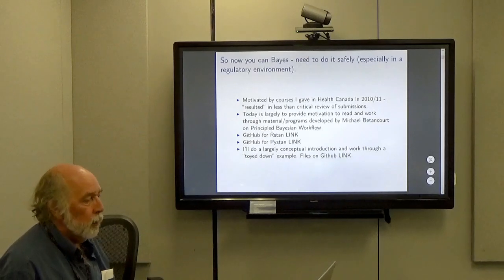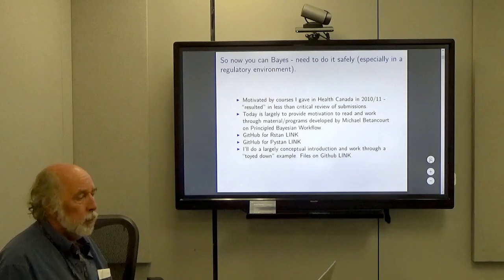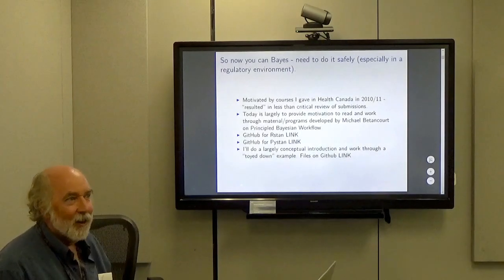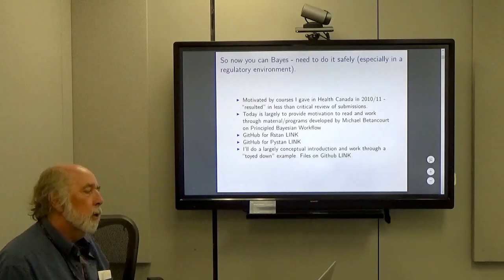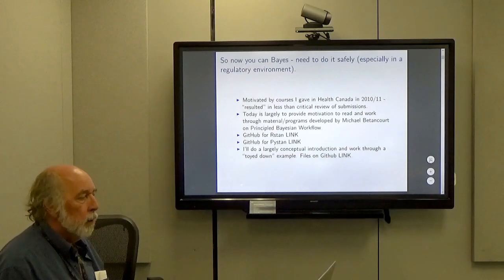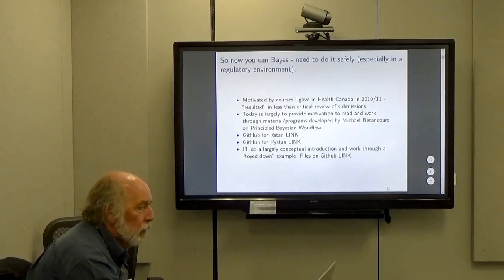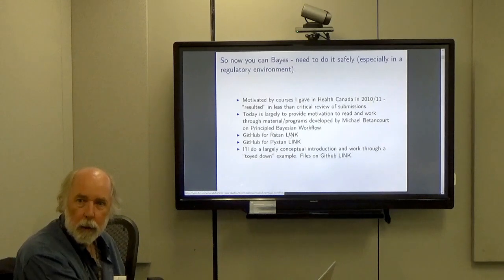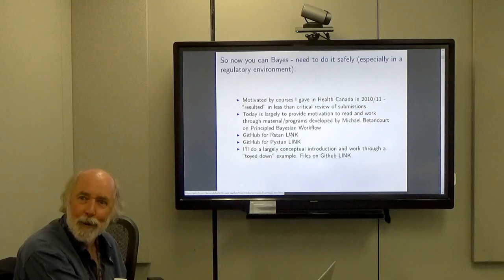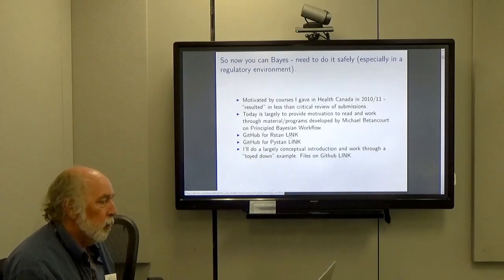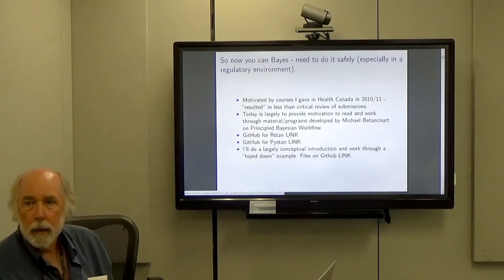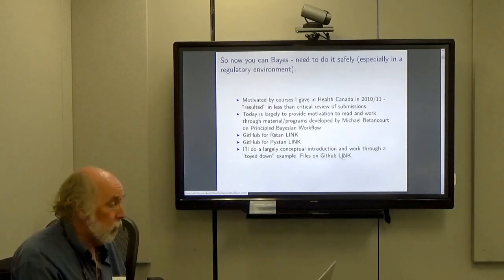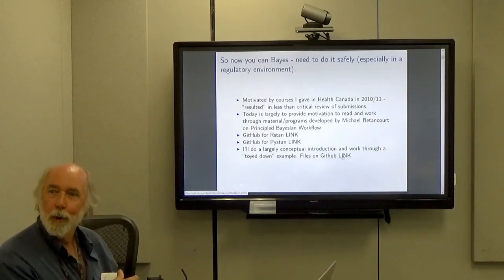This is motivated by courses I gave at Health Canada in 2010-11 on Bayesian statistics that resulted in less than critical review of submissions. There is largely to provide motivation to read and work through materials and programs developed by Michael Betancourt. The GitHub for his material is here and you can get it either in RStan or PyStan. I'll do a largely conceptual introduction and work through a toyed-down example. The files for this talk, including the programs, are at this link.